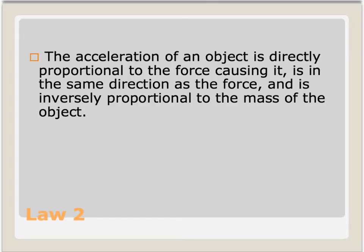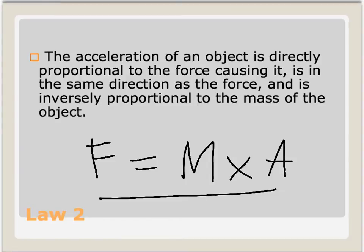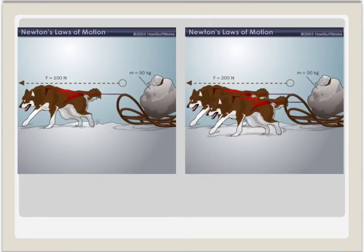Newton's second law can be summarized by the following equation. The equation form of Newton's second law allows us to specify a unit of measurement for force. Scientists decided to use a newton as the official unit of force. One newton, or N, is equivalent to one kilogram meter per second squared.